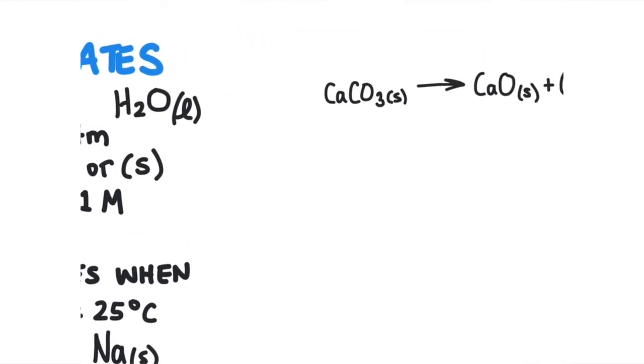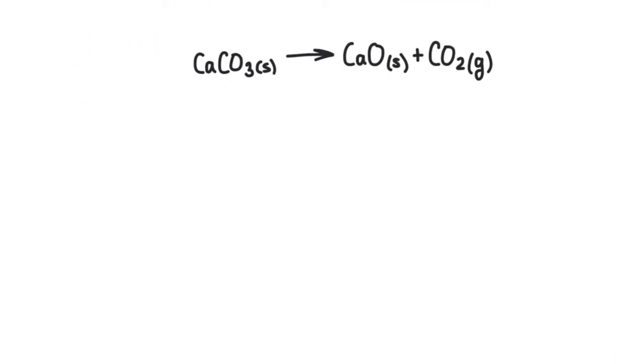So let's look at an example of a chemical reaction so we can understand how these enthalpy of formations would be used to find the enthalpy change during a chemical reaction. So in this example, we have calcium carbonate that's decomposing into calcium oxide and carbon dioxide.